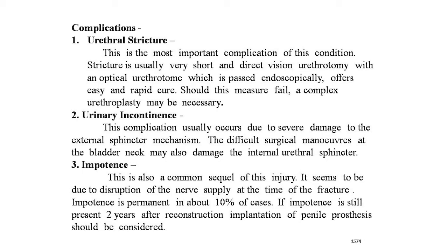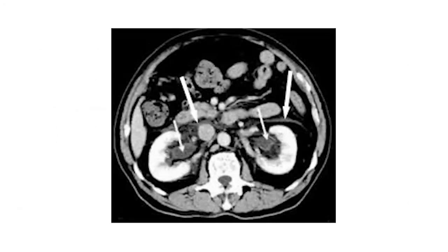The third complication is impotence, a common sequel of this injury, seemingly due to disruption of the nerve supply at the time of fracture. The incidence may vary from 30 to 80 percent. Impotence is permanent in about 10 percent of cases. If impotence is still present two years after reconstruction, implantation of a penile prosthesis should be considered. Here is an image in a CT film clearly showing extravasation of urine.